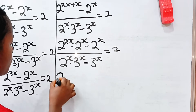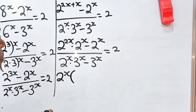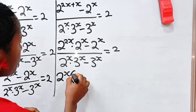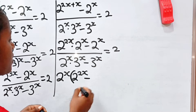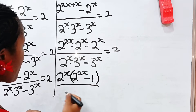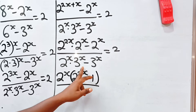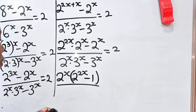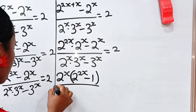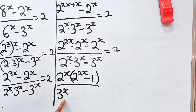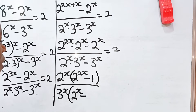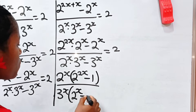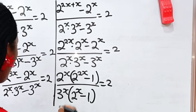For the numerator, let's factorize 2 to the power of x. When divided, this will remain, and when divided by itself, we have 1. Divided by: we bring out 3 to the power of x from the denominator. When divided, this will remain, and when divided by itself, 1 will remain. It is equal to 2.